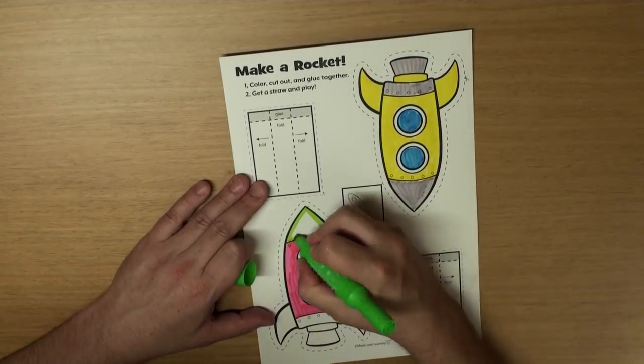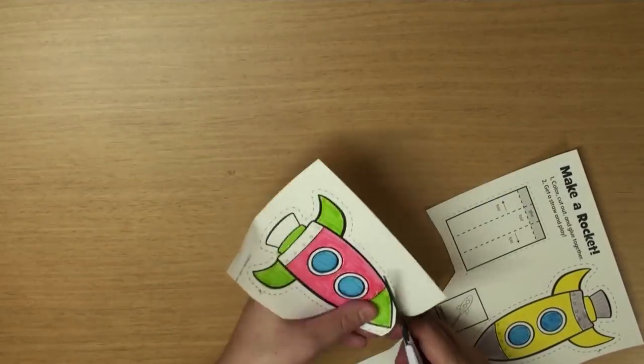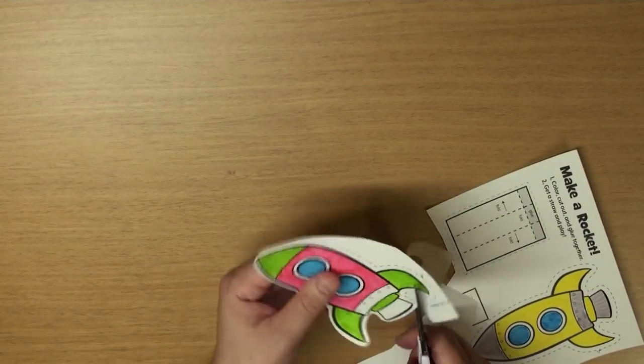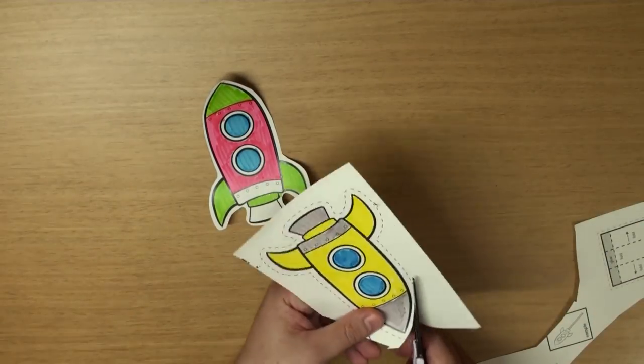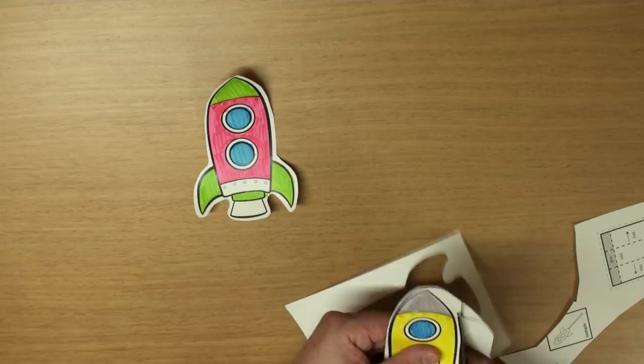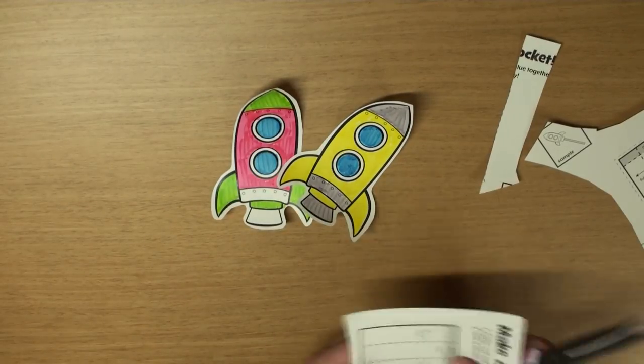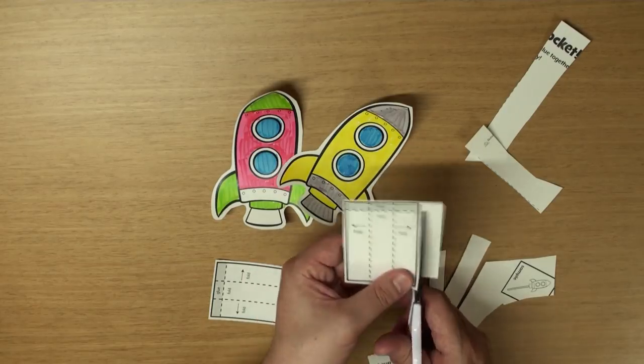Almost done. Yeah! Now get your scissors and cut it out. Cut out one rocket. Two rockets. And the two backing pieces, okay? Yeah! Great!